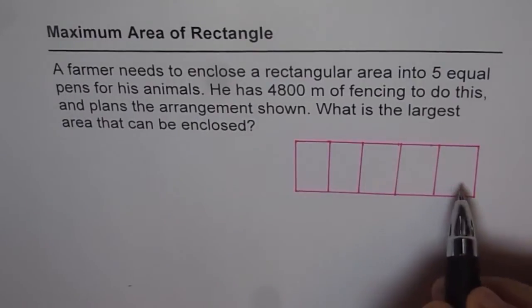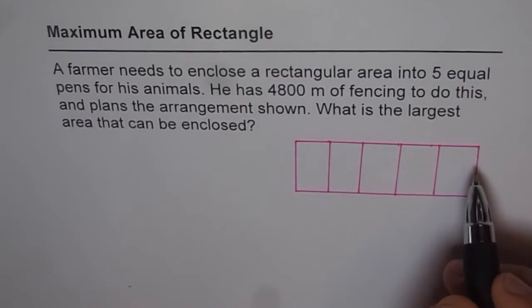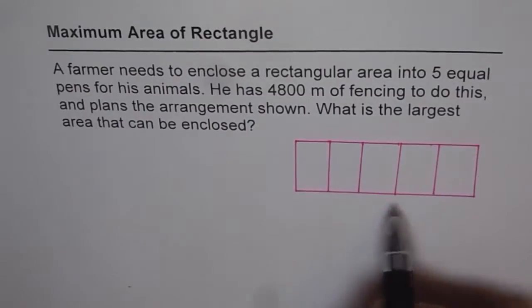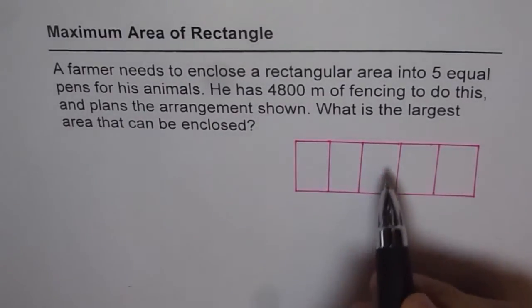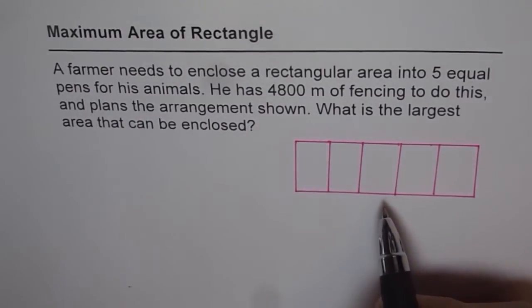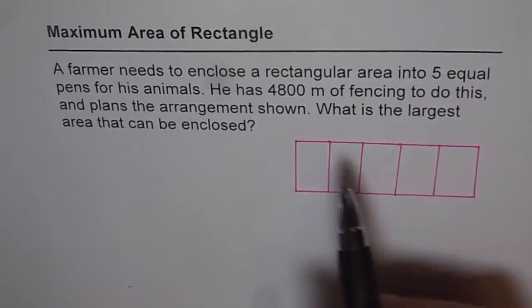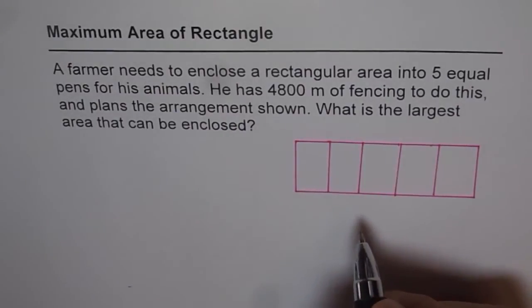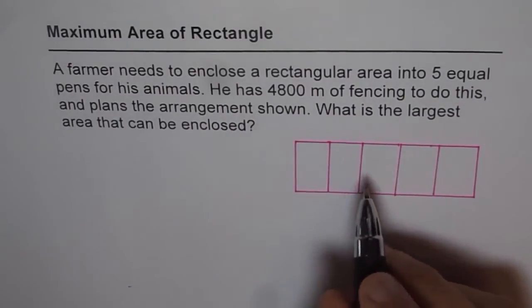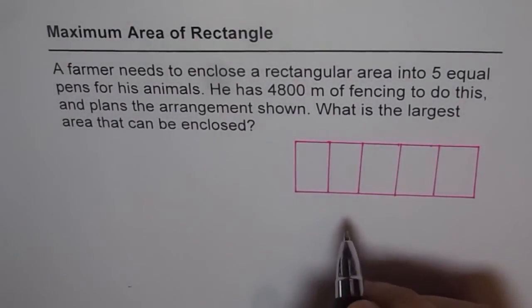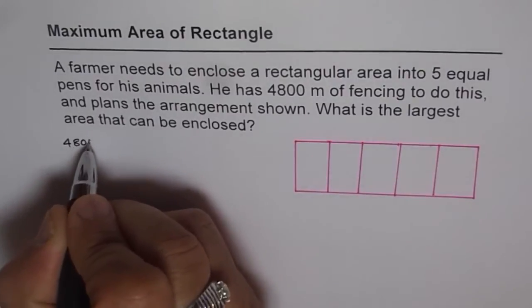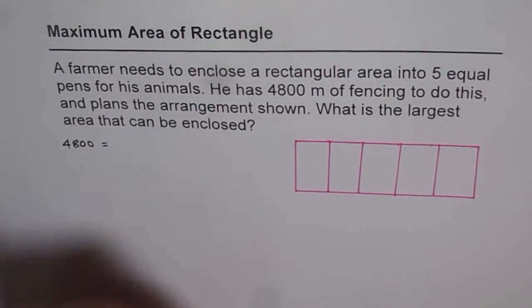So it is a rectangular area and we are given the perimeter — that means all along and these divisions combined length is 4800 meters. So the perimeter given to us is 4800 meters of fencing.